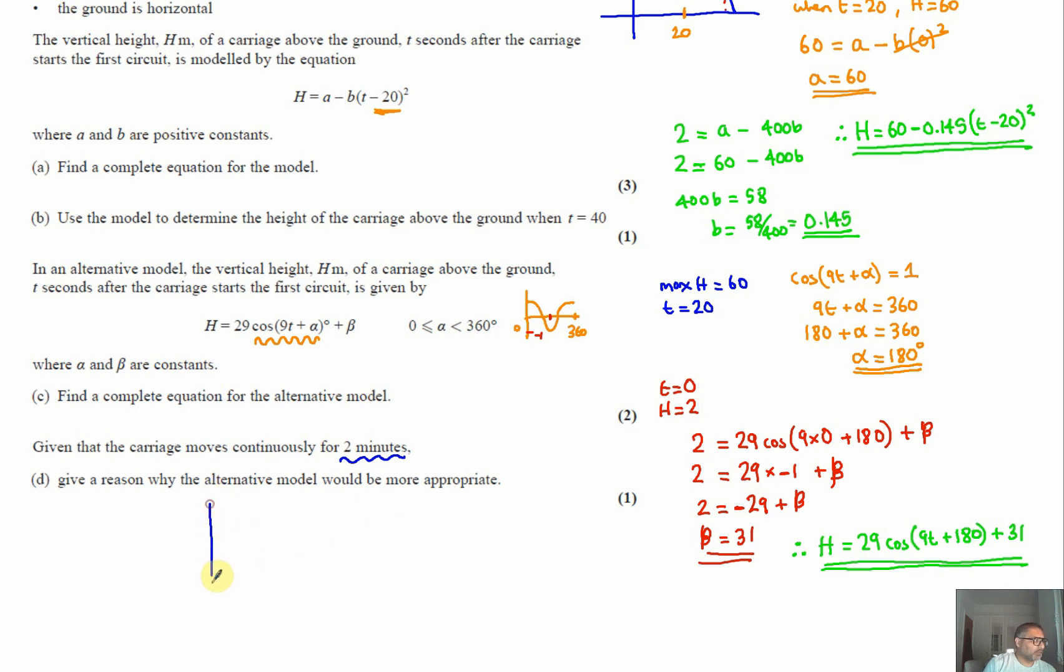If you plot the graphs, what you'll find is our original function, which was the quadratic, starts at 2 as a maximum point at 20, where that's 60. Now our cosine graph that we've just done, if you plug that into your calculator, will look something like this.